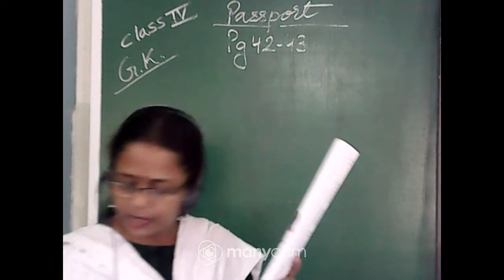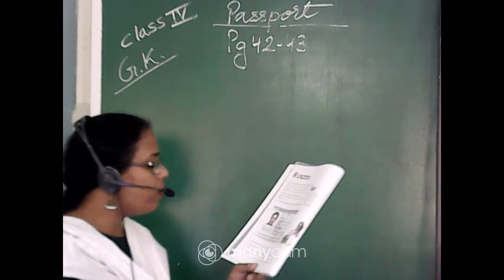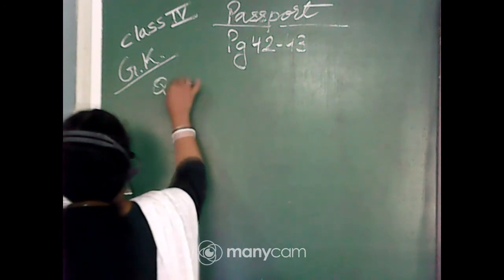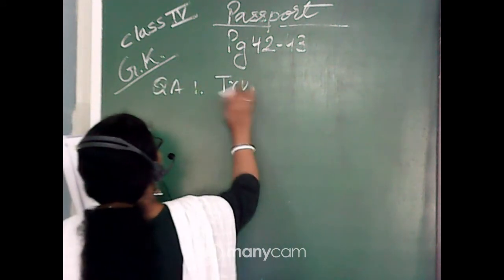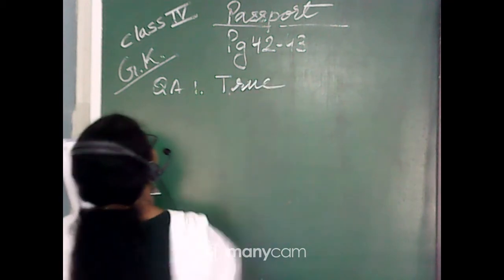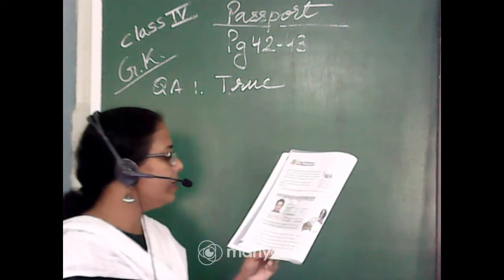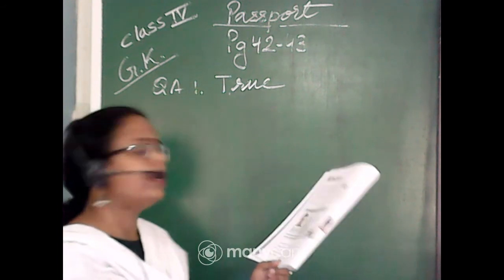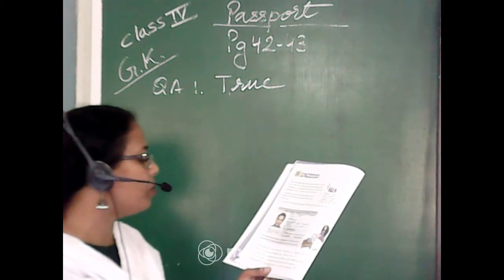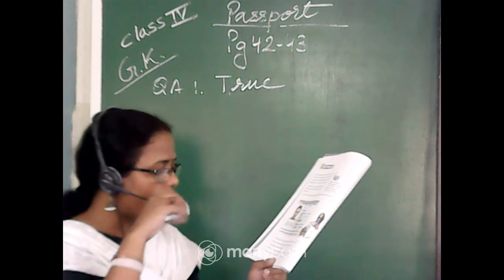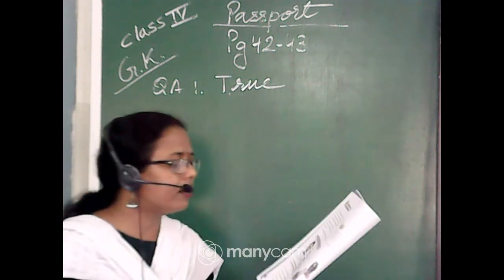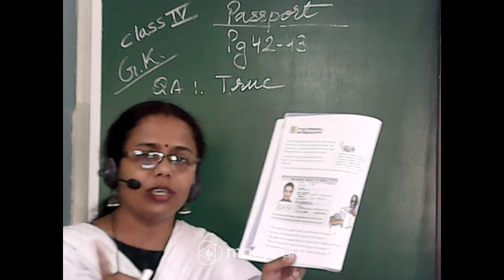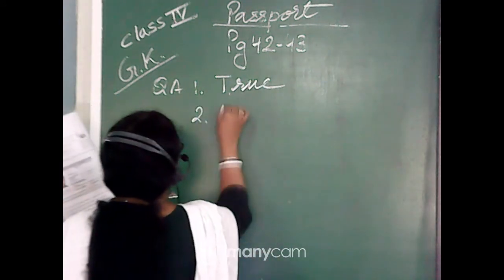Now let's look at the statements and write the answers. Statement one: 'The name of the passport holder is written below the surname.' Yes, it is true — the surname is written first, and the name of the passport holder is written below the surname. Statement two: 'The age of the passport holder is shown on the passport.' Do we find any age written? No — date of birth is written but age has not been mentioned. So it is a false statement.